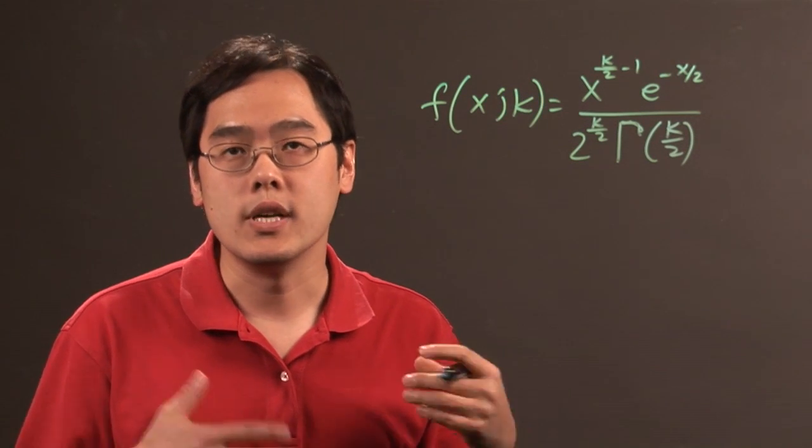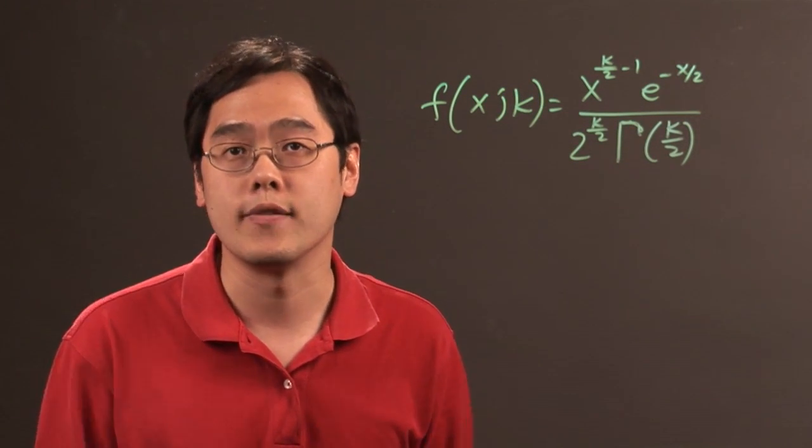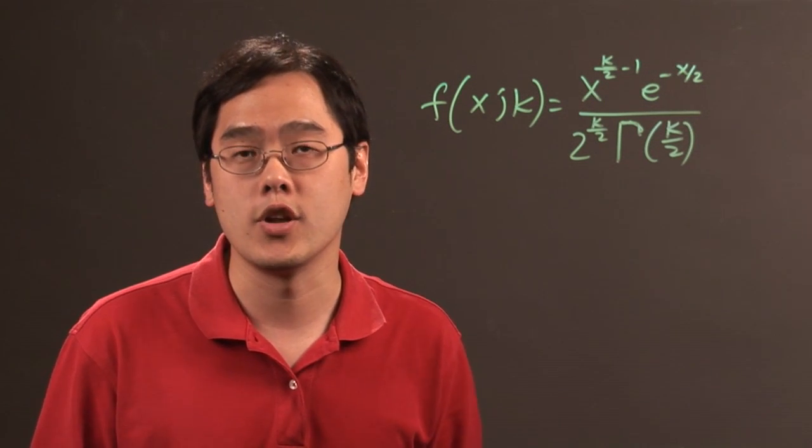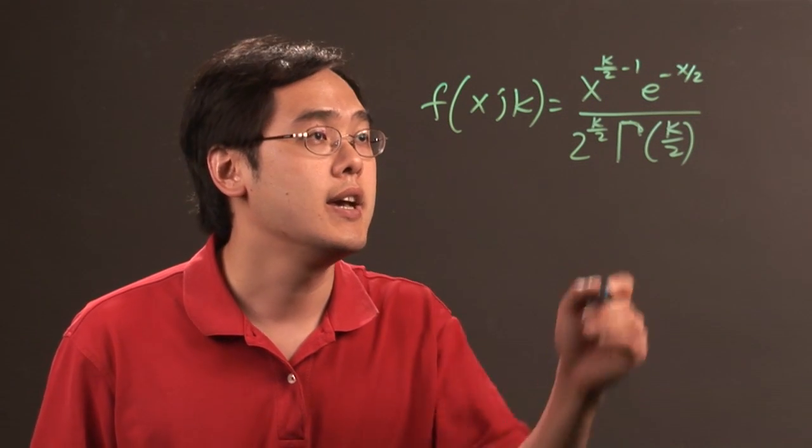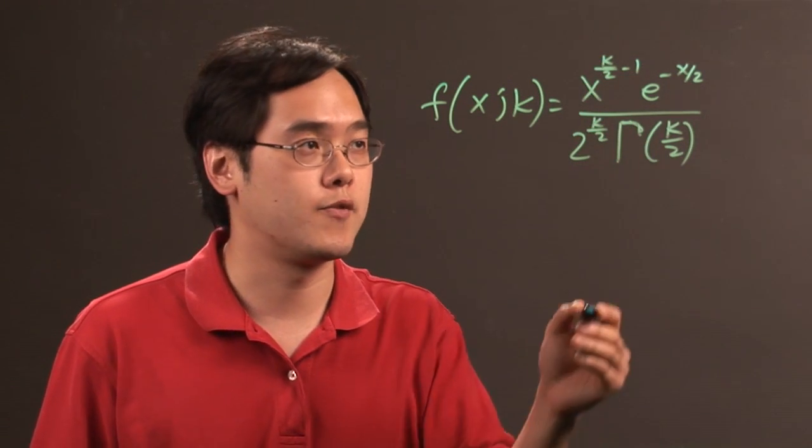Now, the chi-square distribution is actually a special case of the gamma distribution. So by now, if you're watching this and you're taking statistics, you should probably already know what the gamma distribution happens to be. And needless to say, k is pretty prevalent throughout this particular formula.